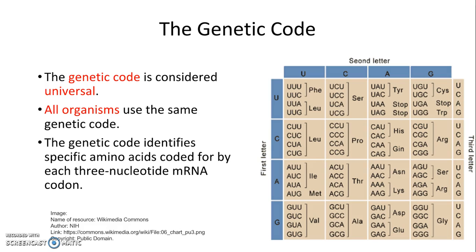The genetic code is considered universal. All organisms use the same genetic code, and all that means is that all organisms are using this genetic code sequence or chart that we use in our bodies to make proteins.